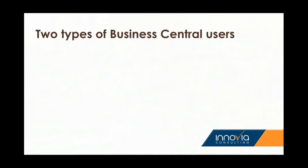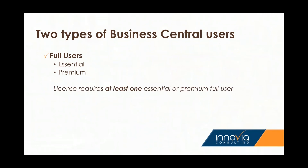There are two types of Business Central users. We have full users, and under full users we have two different levels: essential and premium. The level dictates the functionality that a full user can have, and that's going to be the focus of tomorrow's session. Any license purchased for Business Central requires that you have at least one essential or one premium full user, because all of the inherent functionality in Business Central falls under a full user.